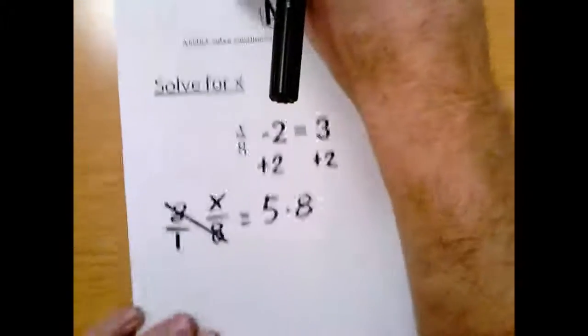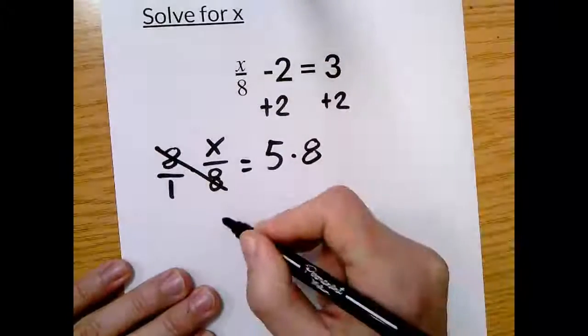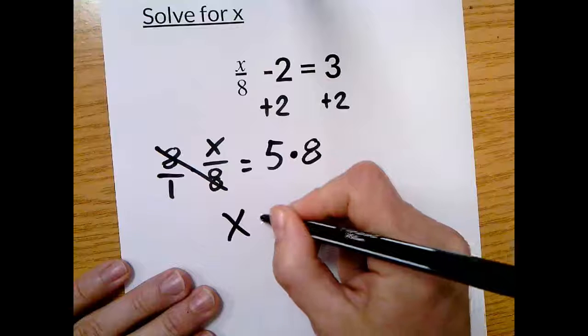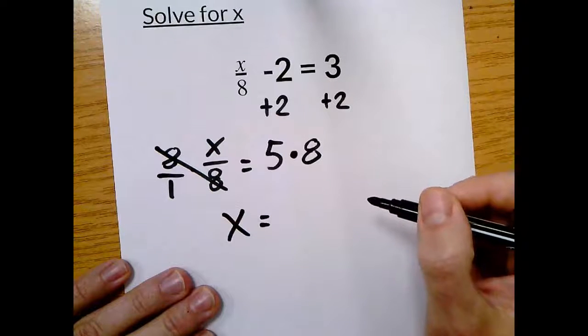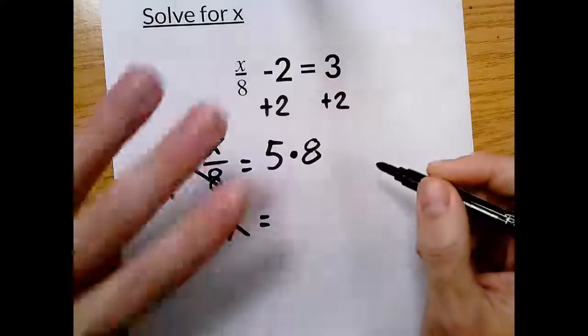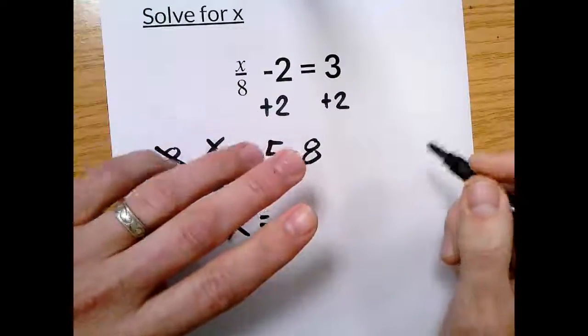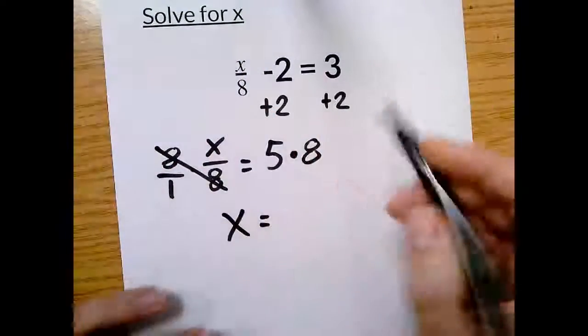I'm going to come down here a little bit. I'm writing so big. We say x is, well, what is 5 times 8? If you don't know, you can count up by 5s 8 times. Pretty straightforward. 5, 10, 15, 20, 25, 30, 35, 40. There you go. It's 40.